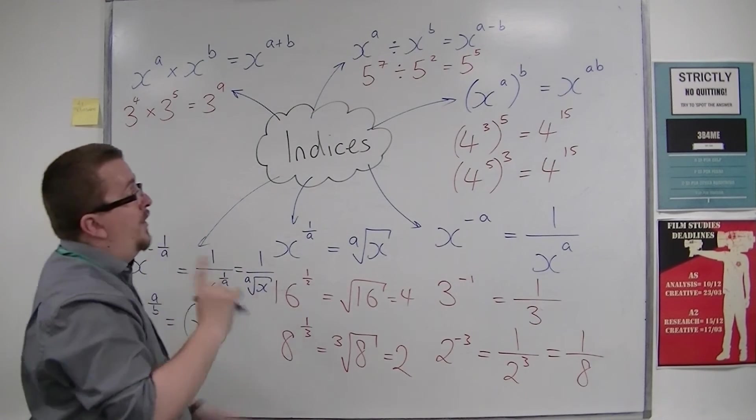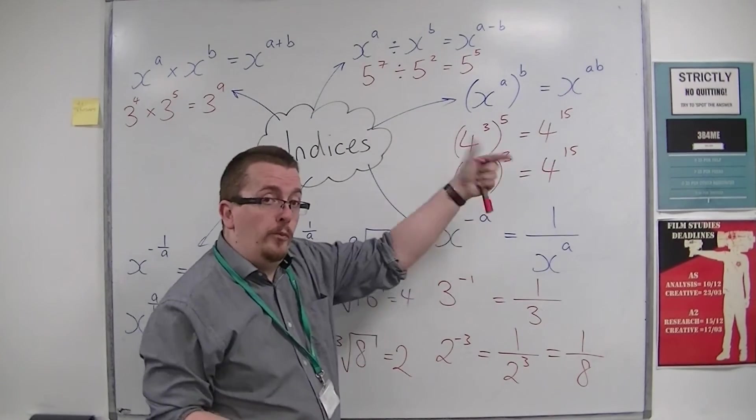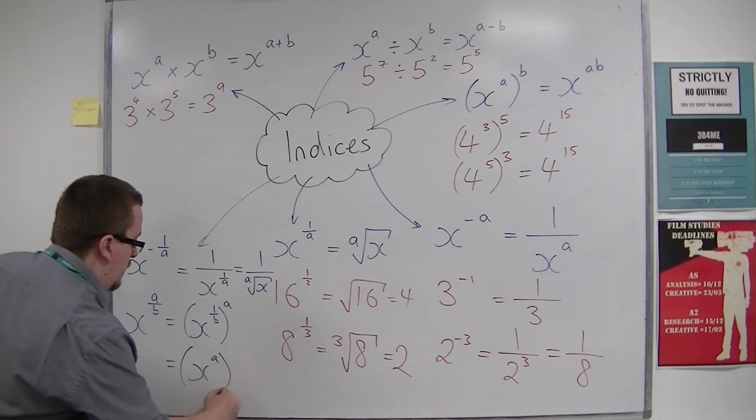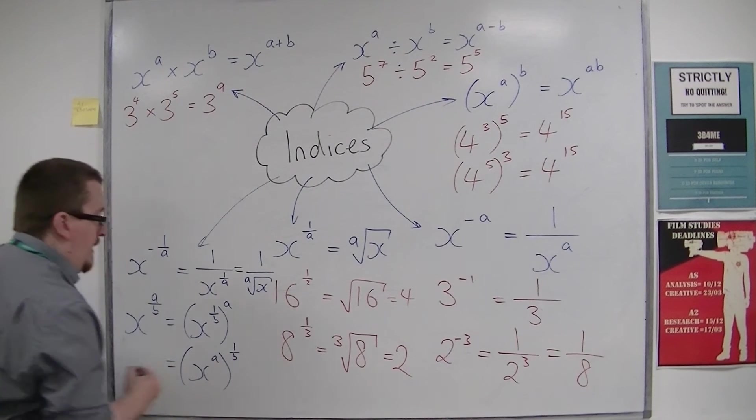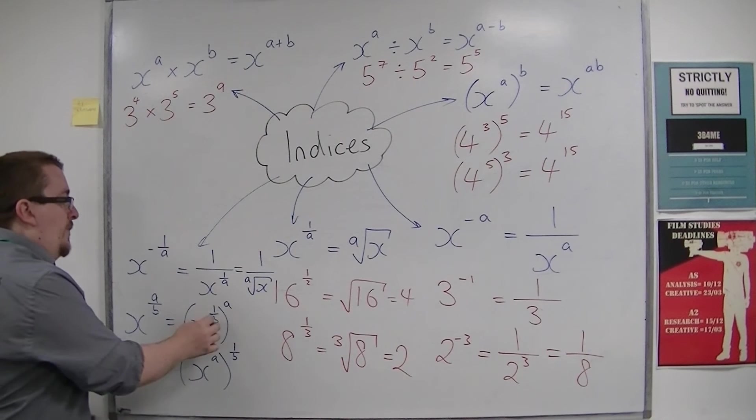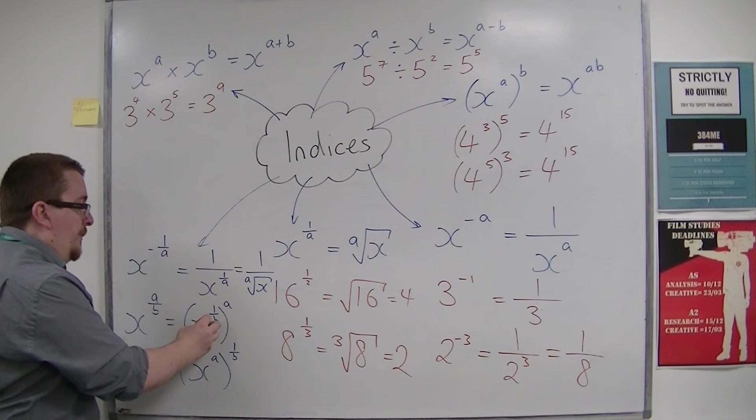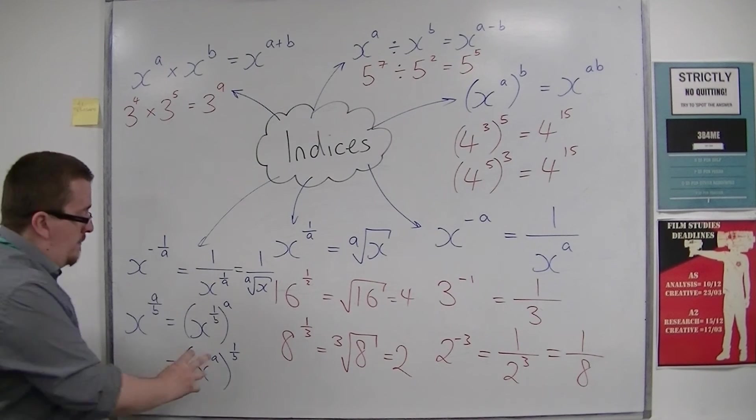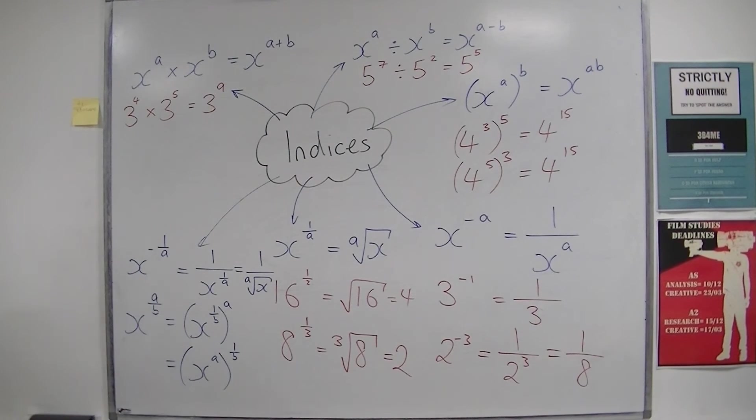Because we had that interaction where you could switch them, you could write that as x to the power of a all to the power of 1 over b. This is especially useful when you're thinking about doing a root first or the index first, the cubing or squaring.